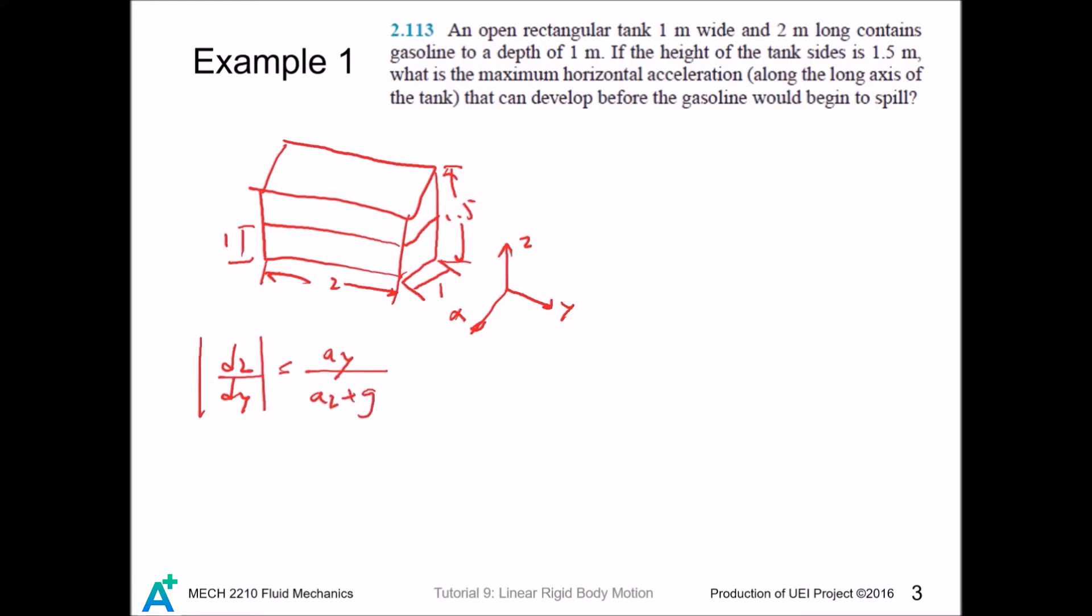We're concerned with the magnitude. For the water to spill, the slope must be one to two. There is no motion in that direction, so this goes to zero. We conclude that ay equals half g, which is 4.91 meters per second squared.